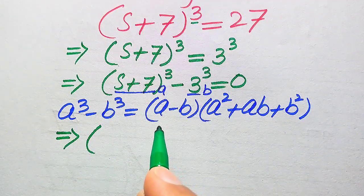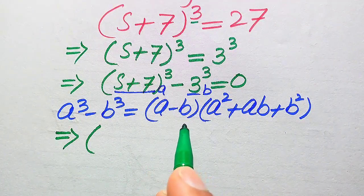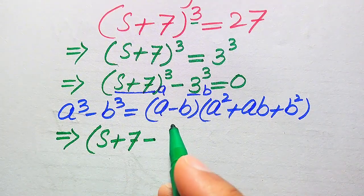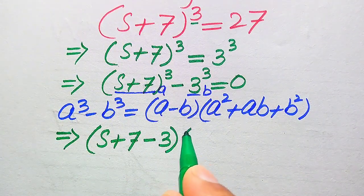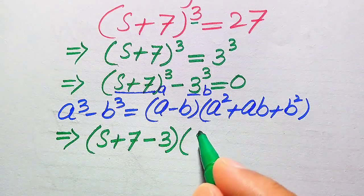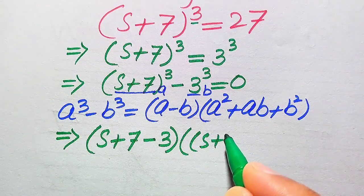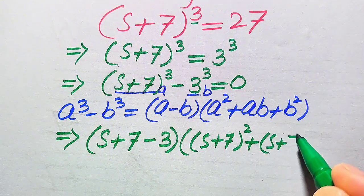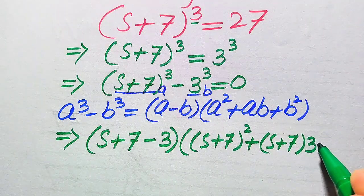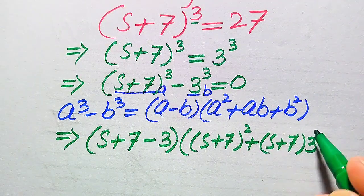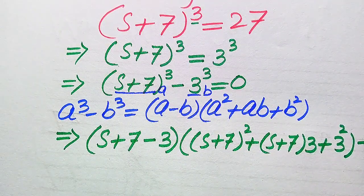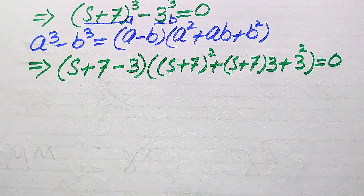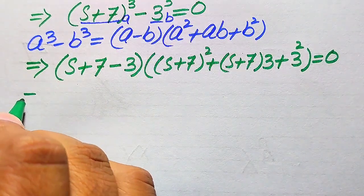According to the formula, we write the equation as: the first factor is (a − b), where a = (s + 7) and b = 3, giving (s + 7 − 3). The second factor is a² + ab + b², so we have (s + 7)² + (s + 7)(3) + 3², and this whole expression equals 0.